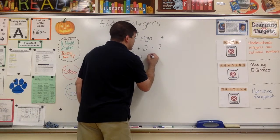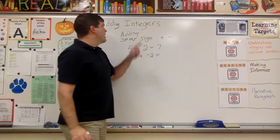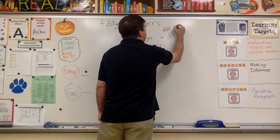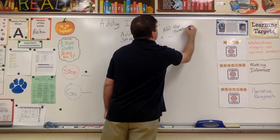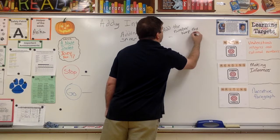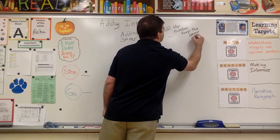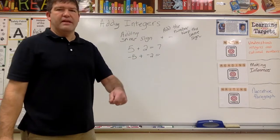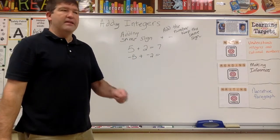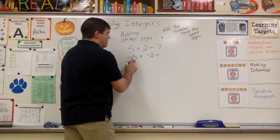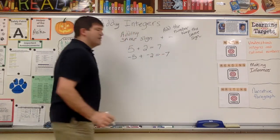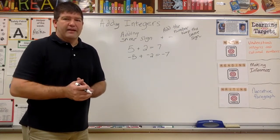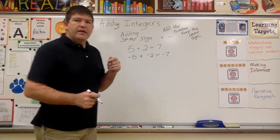Now if I have negative five plus negative two — same sign — I keep the sign and add the numbers. If it's negatives I keep the negative sign and add the two numbers. So negative five plus negative two: five plus two is seven, and I keep the negative sign, so I have negative seven. When it's the same sign, you just add them together and keep the sign. That one's pretty straightforward.